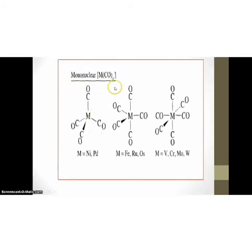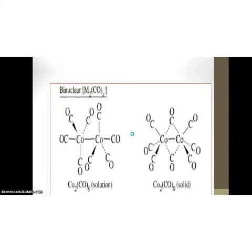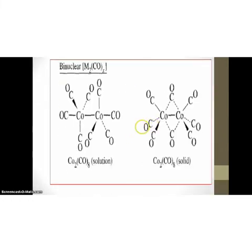For example, mononuclear carbonyl compounds, which means one metal atom and other carbonyl atoms are attached. For example, NiCO4, FeCO5, only one metal atom is present. In binuclear, there are two metal atoms present. For example, Co2CO8, Mn2CO10, these are the examples.